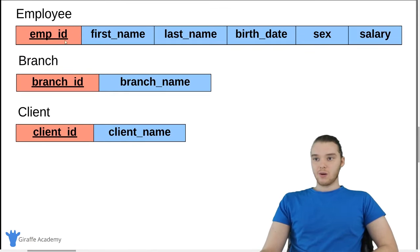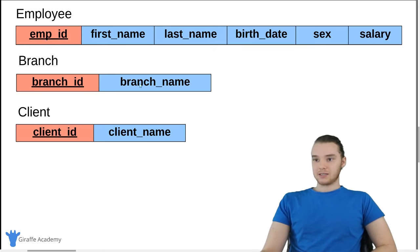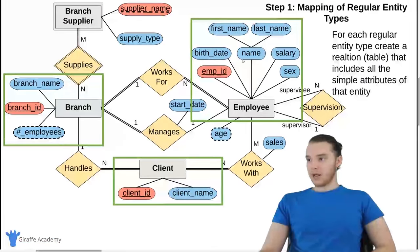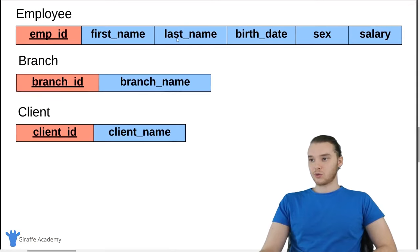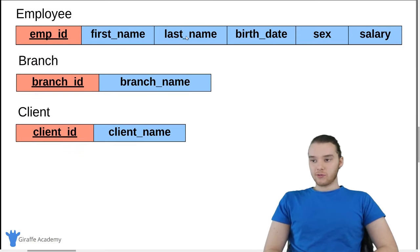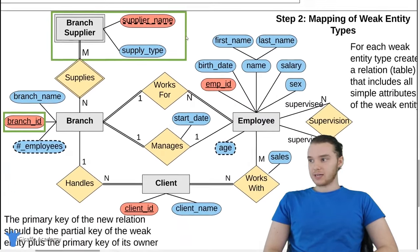So we have our employee relation with the employee ID as the primary key, first name, last name, birth date, sex, and salary. And we have the branch with that information, and then we have the client. I also want to show you guys that when we had a composite attribute — so this name attribute over here — we're just storing the sub-attributes, so we're just storing first name and last name. So here we have three relations, and let's see if we can start adding to those.